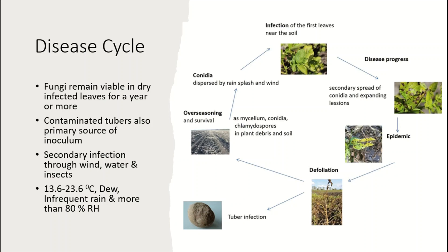This is a disease cycle — an oversimplified disease cycle. Fungi remain viable in dry infected leaves for a year or more. Contaminated tubers are a primary source. Secondary infection takes place through wind, water, and insects.